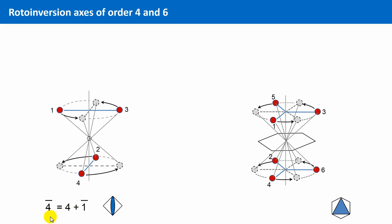As you already know, rotational symmetry in crystalline matter is limited. We can find only rotoinversion axes of the order 1 to 4 and 6.